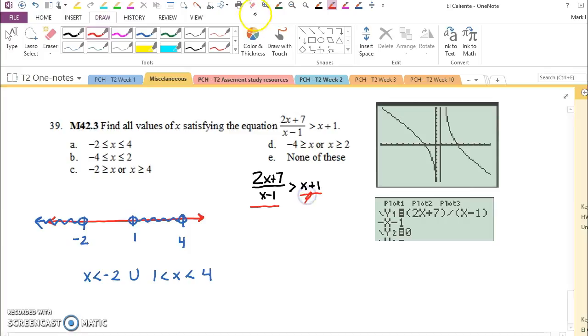So instead, I'm going to subtract everything on the right-hand side from the other side. So I'm now looking at when 2x plus 7 over x minus 1 minus x minus 1 is greater than 0.